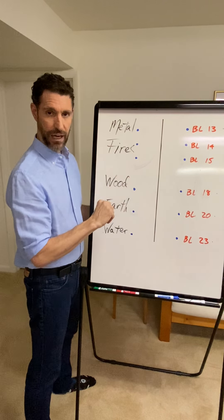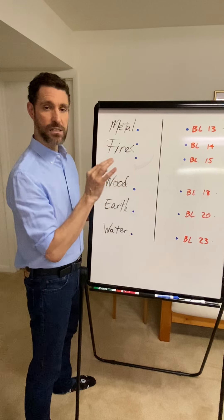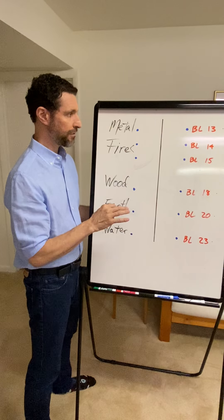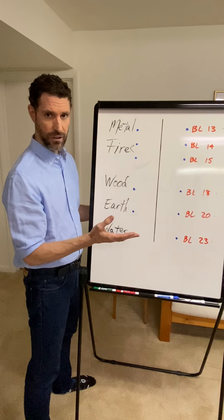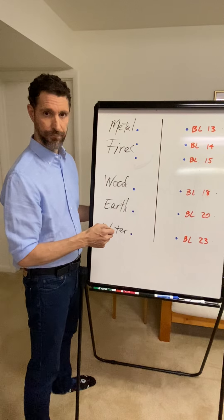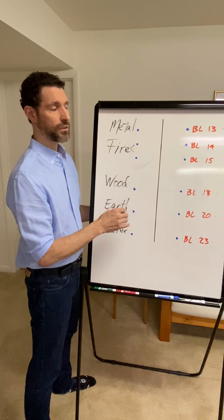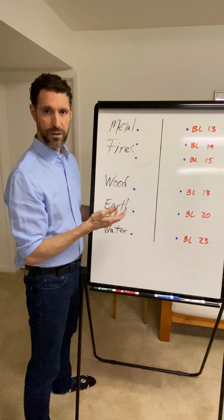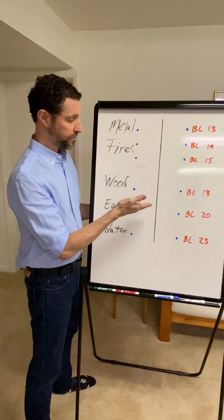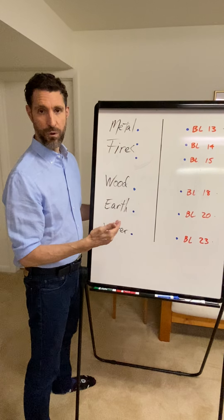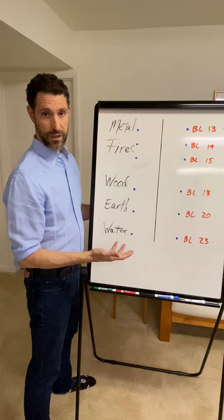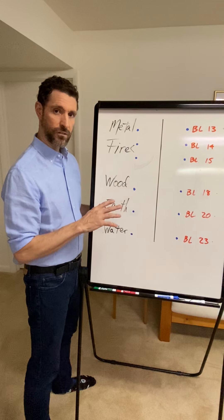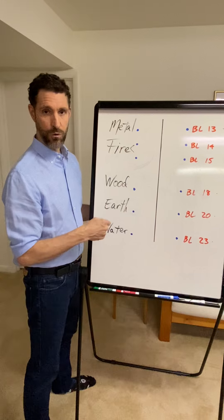When tonifying these points, we needle them a little more deeply than in AE use — about two to three fen generally, unless the patient has thicker muscle tissue. We tonify these points starting from the left going to the right, then work specifically with whatever associated effect point is going to support the Qi deficient organ system. These are phenomenal points to use in cases of Qi deficiency of the individual organs.